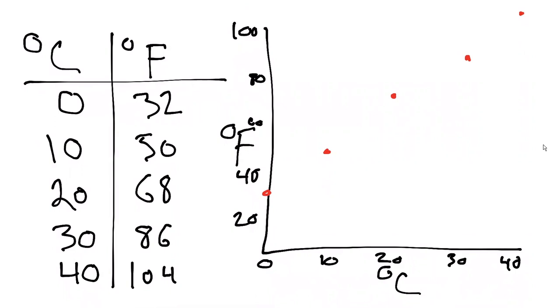We know when it's zero degrees Celsius, it's 32 degrees Fahrenheit. I plotted all those values here in the graph. Degrees Celsius, the independent variable, is on the x-axis. Degrees Fahrenheit is on the y-axis.